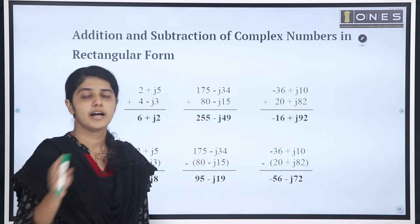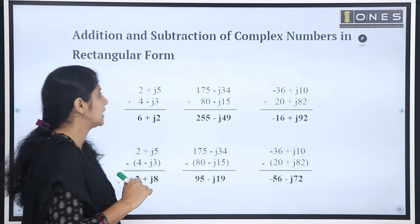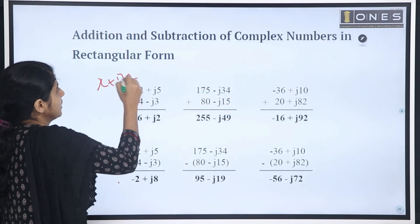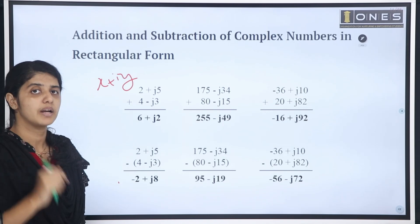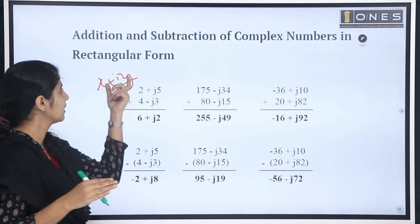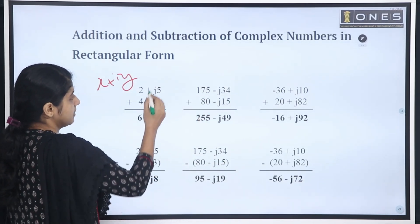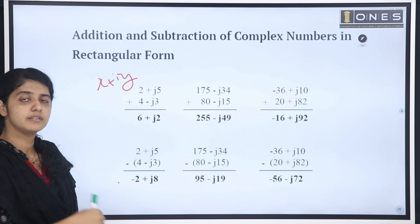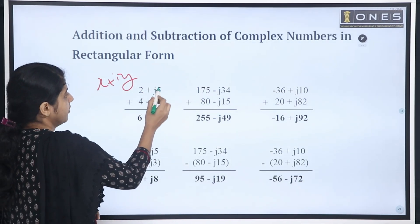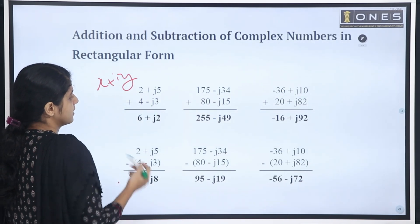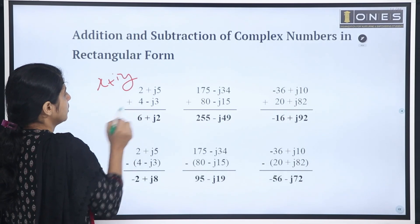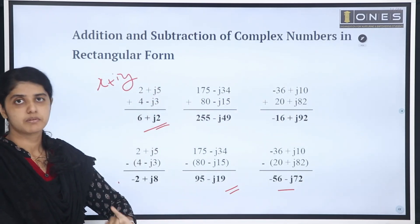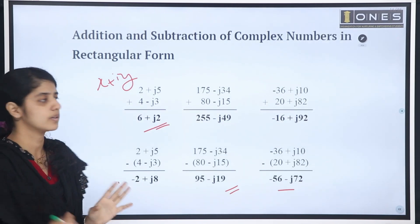For complex number operations: addition and subtraction are done in rectangular form. Simply separate real and imaginary parts. For example, (2 plus j5) plus (4 minus j3): real parts add as 2 plus 4 equals 6, and imaginary parts add as j5 minus j3 equals j2. So the result is 6 plus j2.